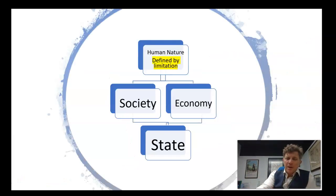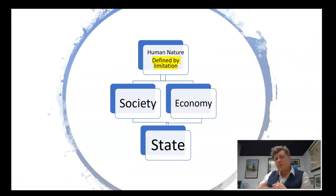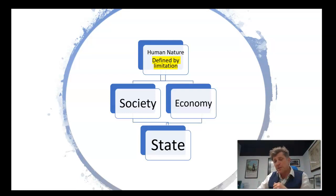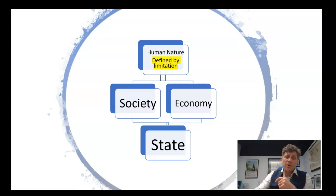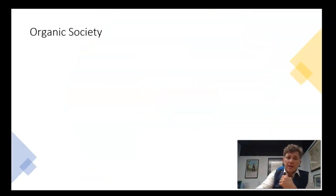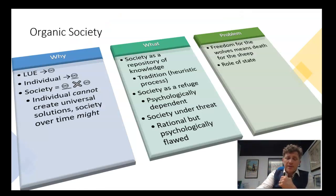So that's human nature defined by tripartite limitation: intellectual limitation, psychological dependence, and psychological flaws. Let's go on and talk about society.